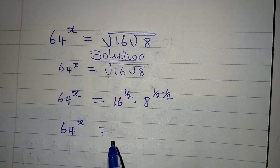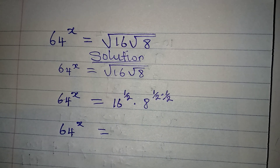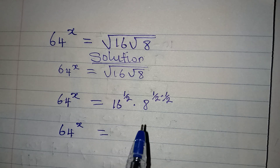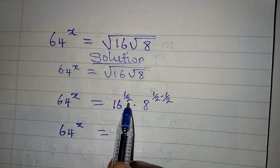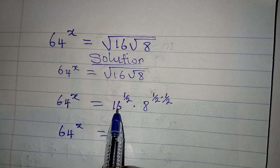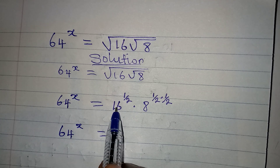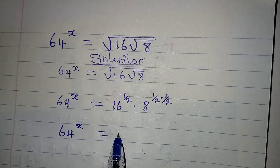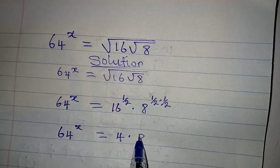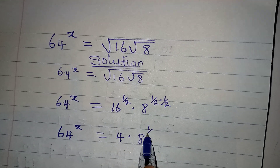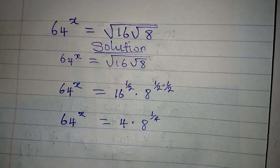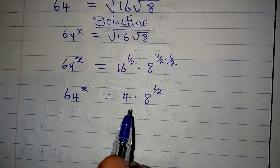Continuing, 64 to the power of x will be equal to: first, we get the value of the square root of 16, which is 4. Then we multiply by 8 to the power of 1 over 4.